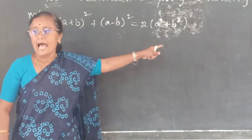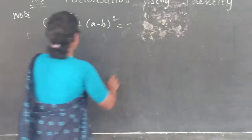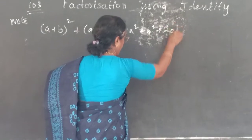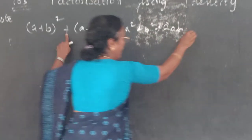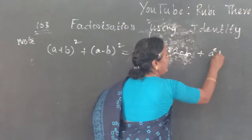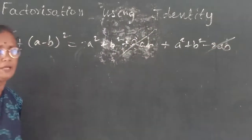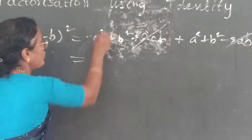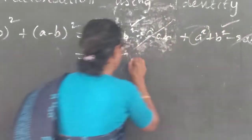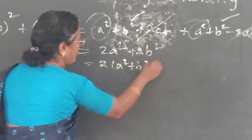Even though you don't know the answer, you can derive it on the spot. This is nothing but (a + b) whole square, so a² + b² + 2ab, plus (a - b) whole square, which is a² + b² - 2ab. So minus 2ab and plus 2ab cancel. How many a² are there? 2a². How many b²? 2b². That is equal to 2 into (a² + b²).